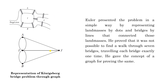What Euler did was represent the places A, I, J, and B as dots, and the seven bridges as edges (arcs). This problem was represented in the form of graph theory. He defined some terms and gave theorems, and on the basis of those theorems he proved that it was not possible to find a walk through the seven bridges traveling each bridge exactly one time. We will discuss all these terms later on.